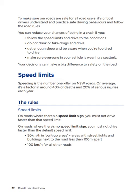Speed limits. Speeding is the number one killer on New South Wales roads. On average, it's a factor in around 40% of deaths and 20% of serious injuries each year. The rules — speed limits: on roads where there is a speed limit sign, you must not drive faster than that speed limit. On roads where there is no speed limit sign, you must not drive faster than the default speed limit: 50 km per hour in built-up areas (areas with street lights and buildings next to the road less than 100 metres apart), and 100 km per hour for all other roads.